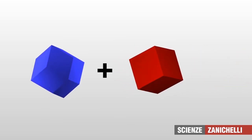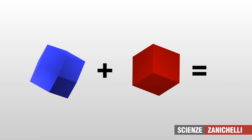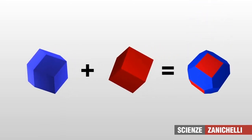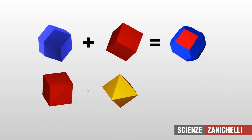In turn, simple forms can combine with each other. A cube and a rhombic dodecahedron can combine into a new composite form. But if the cube combines with an octahedron, the composite form is different.